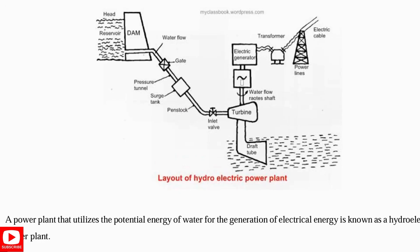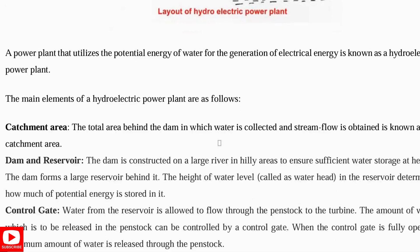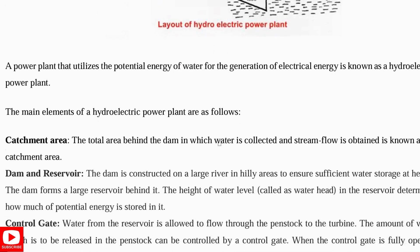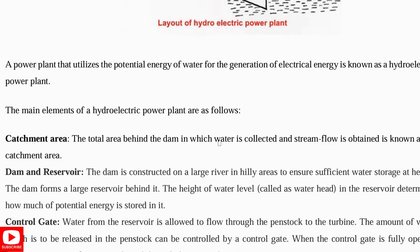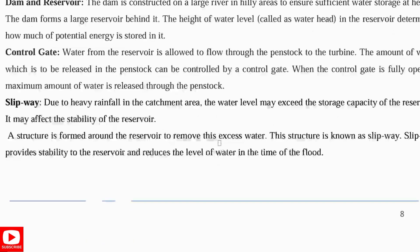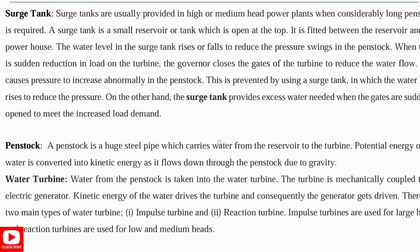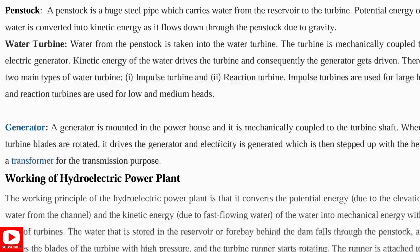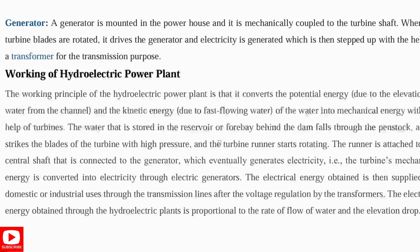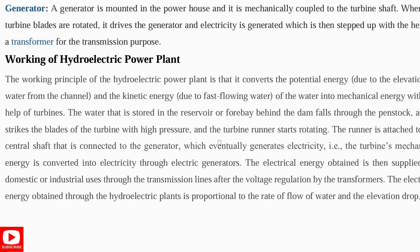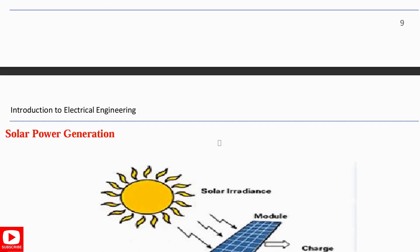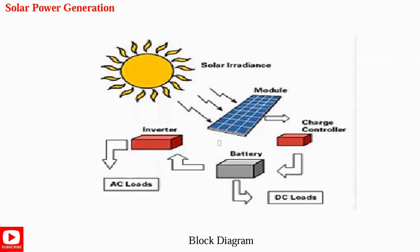The water runs through the turbine, then through the draft tube — the flowing water rotates the shaft and electricity is generated. A transformer converts the voltage and it is sent through power lines and electric cables. For each component — catchment area, dam and reservoir — explain at least two to three points. Finally, write the working principle: how water flows, turns the turbine, and electricity is generated.